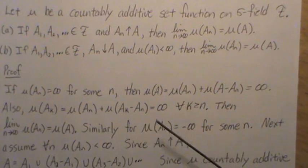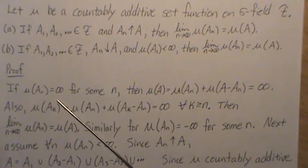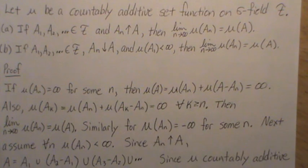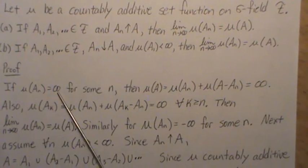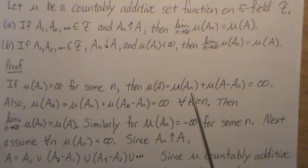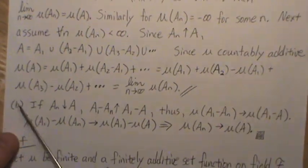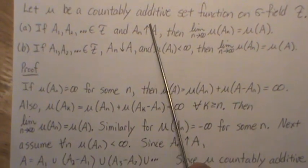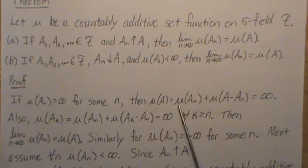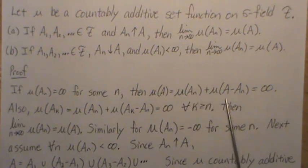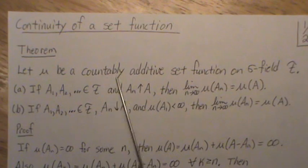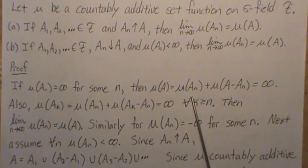Here's the proof. First we assume that if the measure is infinite the property still holds, then we'll prove it for when the measure of a set is finite. So let's say the measure of An is infinity for some An. Then An can be broken up into disjoint sets — this is the proof of A — since they're increasing sets to A, A can be thought of as An union A minus An, and they're disjoint sets. Since the measure is countably additive, it's the sum of those two measures.